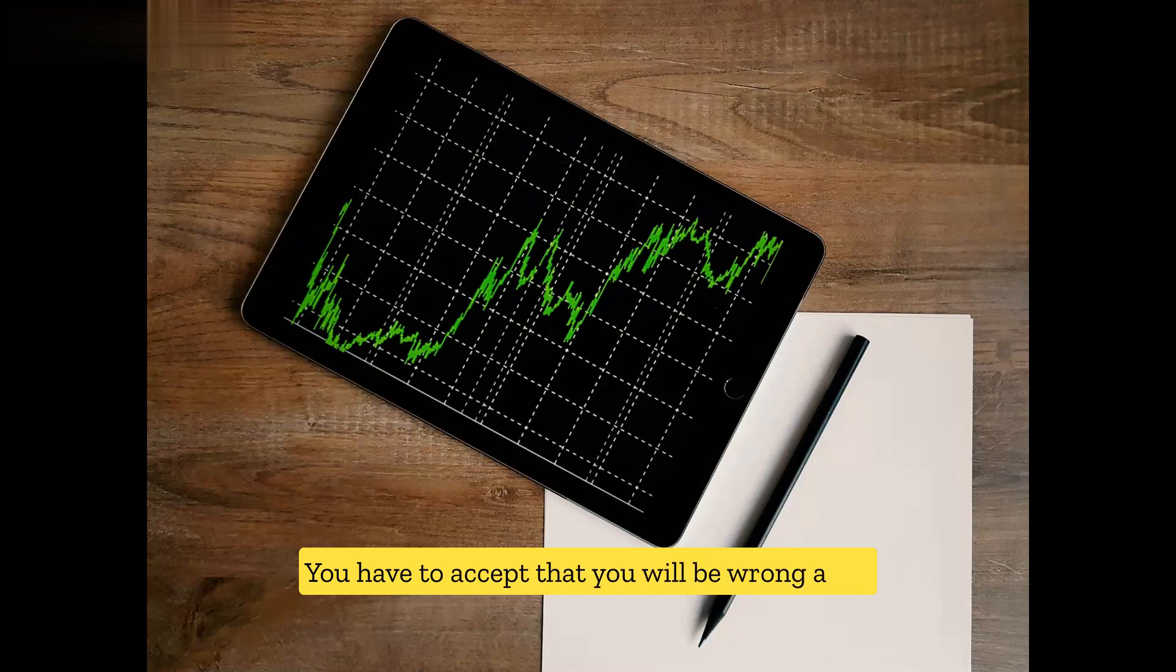Six: You have to accept that you will be wrong a lot. The sooner you accept you are wrong and change your mindset, the better off you will be. Seven: If you really want to be a trader, then you are going to have to accept the fact that trading is not easy money.